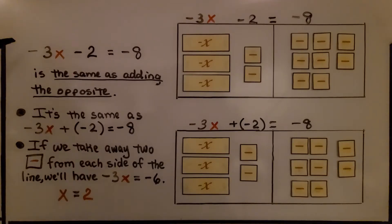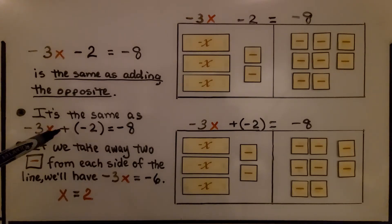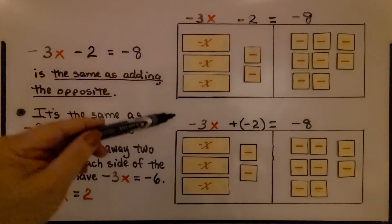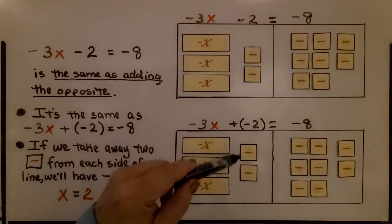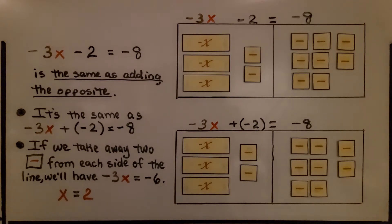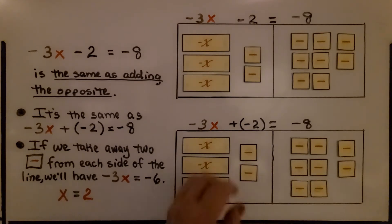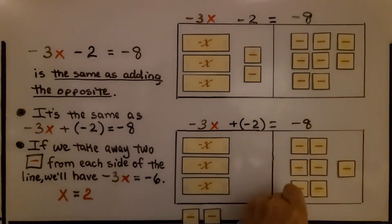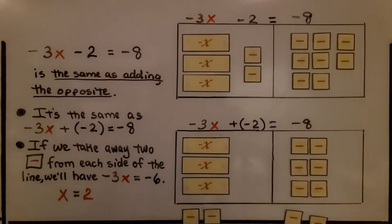For an equation like negative 3x minus 2 is equal to negative 8, it's the same as adding the opposite — instead of subtracting 2, we can add a negative 2, and it will equal a negative 8. We have negative 3x plus a negative 2 equals negative 8. If we take away 2 minus tiles from each side of the line — 1 and 2 from this side, and 1 and 2 from this side — we have negative 3x is equal to negative 6.